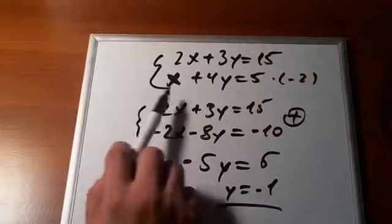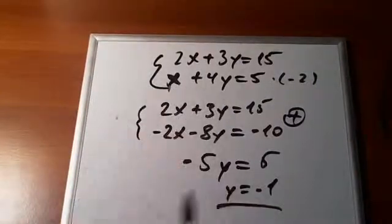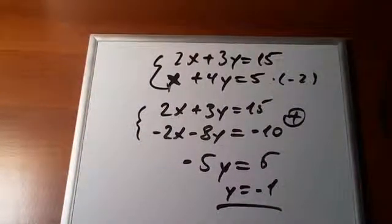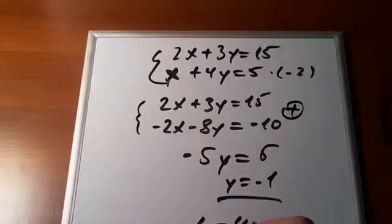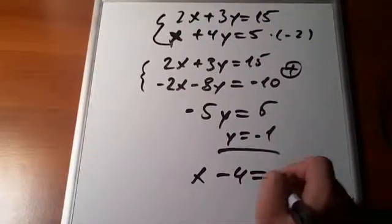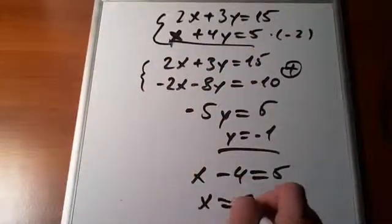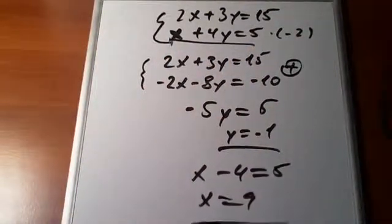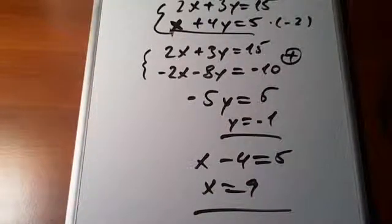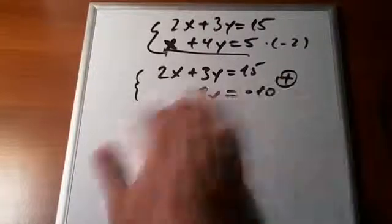And we can plug it in here. So, we'll have x minus 4 is equal to 5. Plug it in here to this equation. And x is equal to 9. Same solutions, same answers as we found before. So, this is another way to solve it. I don't know which way you like better. Some people prefer the first way. Some people prefer this way. It's up to you. Thank you for watching.